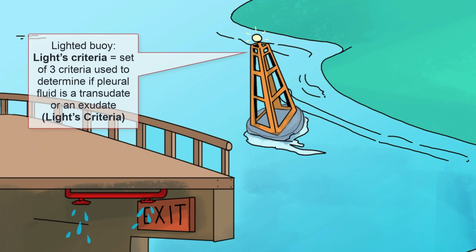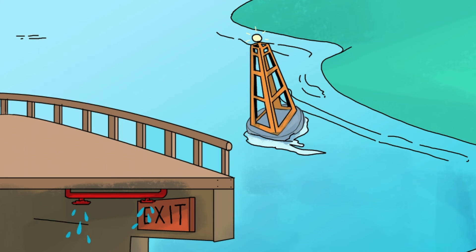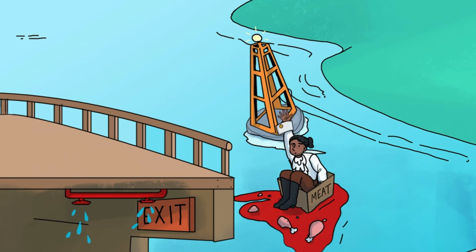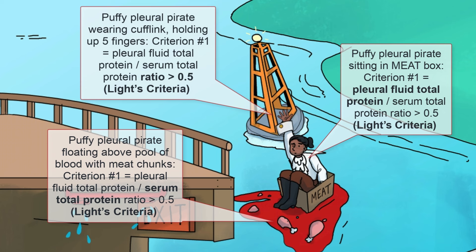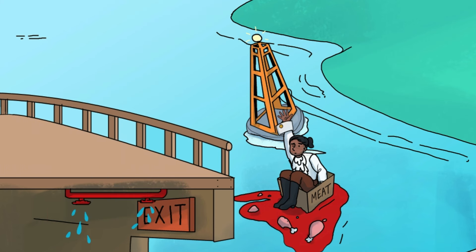At Sketchy, LIGHTS criteria is represented by this buoy floating in the water with a light on top. If at least one of the criteria are met, then the fluid is defined as an exudate. The first criterion is a pleural fluid total protein to serum total protein ratio greater than 0.5. This puffy pleural pirate is sitting in a meat box to represent pleural fluid total protein, floating above a pool of blood with chunks of meat representing serum total protein. His raised hand combined with the cufflink on the shirt sleeve represents the ratio of 0.5 that defines an exudate. Conceptually, a higher concentration of protein in pleural fluid would only occur with increased capillary permeability, allowing those big protein molecules to leak into the pleural fluid.